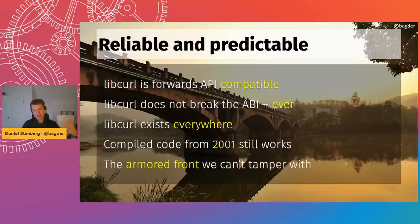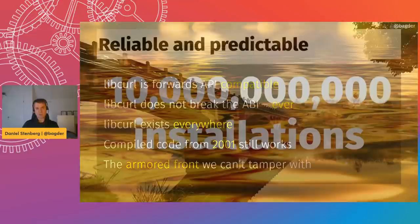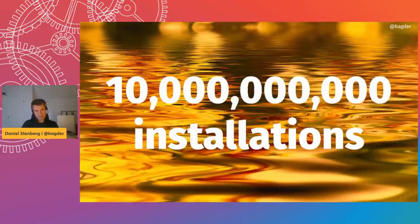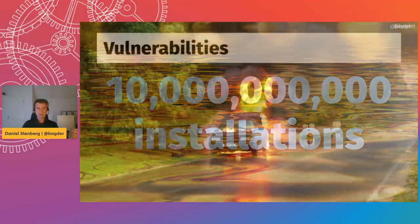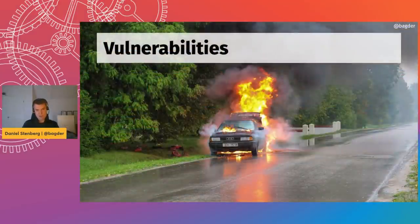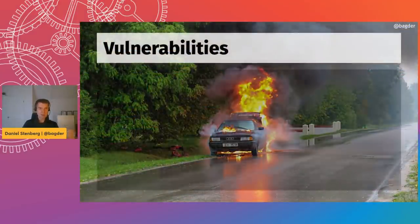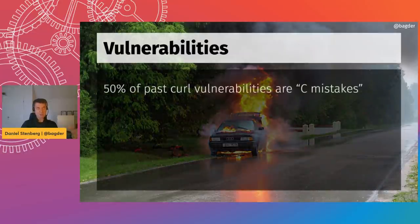The API and ABI — I call it 'armored' — is the front that we don't tamper with. We provide that API and ABI, but behind that we can do whatever we want. The stability and age of curl and libcurl has led to somewhere around 10 billion installations worldwide today, maybe more.